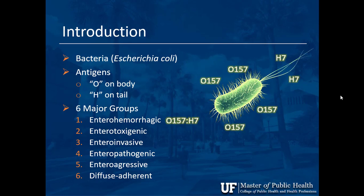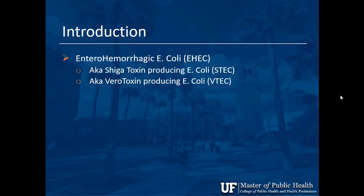That combination makes one of the enterohemorrhagic serogroups of E. coli. Enterohemorrhagic E. coli is abbreviated EHEC, also known as Shiga Toxin Producing E. coli — the term used by the CDC and FDA — and also known as Verotoxin Producing E. coli. All of those are names for the same bacteria.